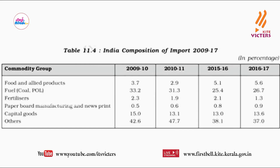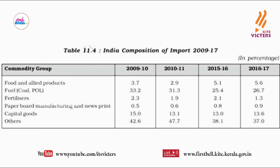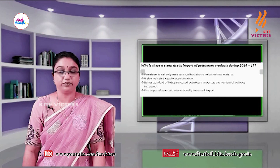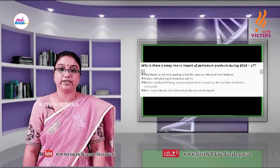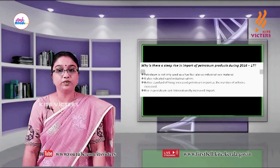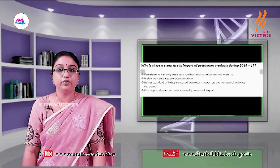Look at table 11.4. It shows India's composition of import between 2009 and 2017. You can see that the amount of fuels imported raised from 25.4% to 26.7% by 2016-17. Petroleum is not only used as a fuel but also as an industrial raw material. It also indicated rapid industrialization. Better standard of living and an increased number of vehicles raised the petroleum import.